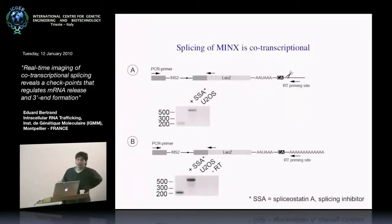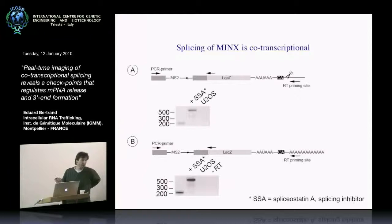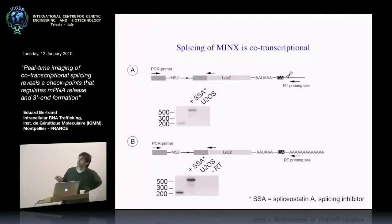This shows there is co-transcriptional splicing. To quantify the amount of splicing, we did an RT-PCR assay using a primer for the reverse transcriptase that binds after the cleavage site at the 3-prime end of the pre-mRNA, detecting only nascent pre-mRNA still attached to the DNA template. Then we did PCR across the intron to see if the RNA was spliced or not. In normal cells, we detect only the spliced message; when you treat with spliceostatin, we detect only the unspliced message. This shows splicing of this intron is quantitatively completed before the RNA is released from the DNA template.